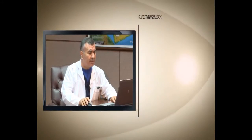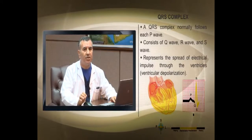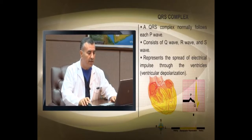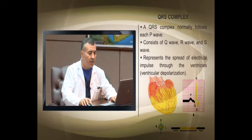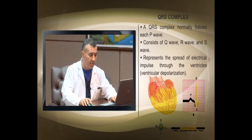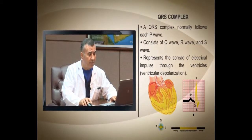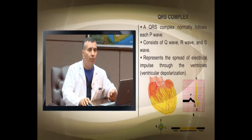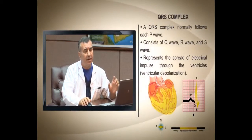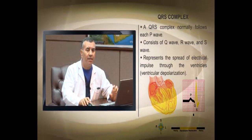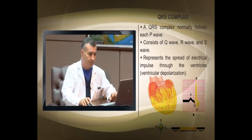The QRS complex represents depolarization of the ventricles. It is measured from the beginning of the Q to the end of the S wave. Normally the QRS is 0.04 to 0.10 seconds — one to two and a half small squares — but can go up to 0.12 seconds. Any QRS wider than 0.12 seconds is considered a wide complex. The ST segment is the line between the S wave and the T wave, and it is affected by ischemia.